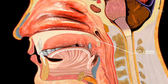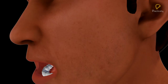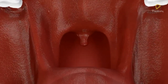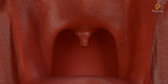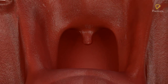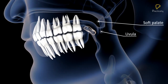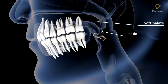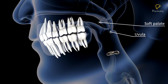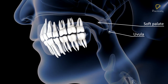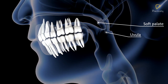The soft palate is made up of muscles, connective tissue, and mucous membrane. The free end of the soft palate hangs down into the pharynx as a small conical flap called the uvula. At the time of swallowing or deglutition, the soft palate and uvula move up and close the internal nostrils, preventing food from entering the nasal chamber.